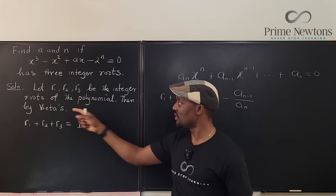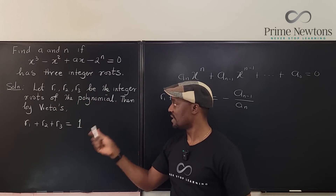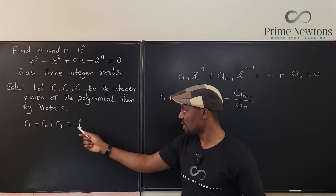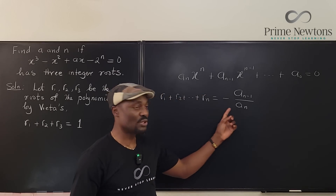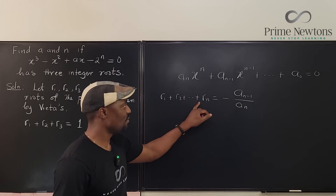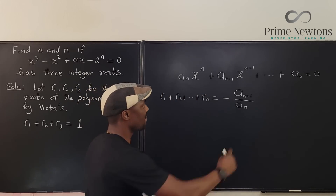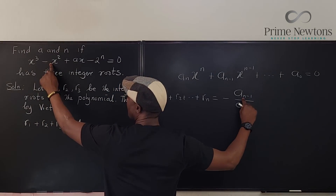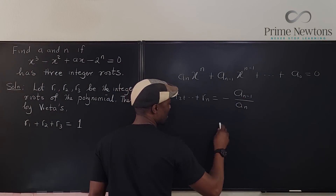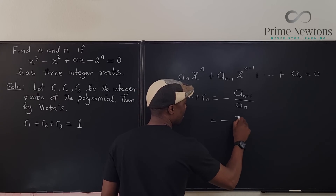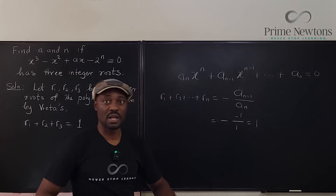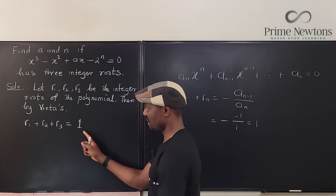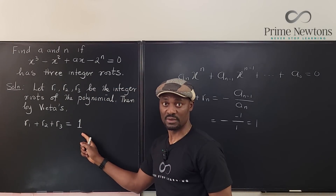Let r1, r2, r3 be the integer roots of the polynomial. By Vieta's formula, the sum of the roots must equal 1, because it equals negative of the second coefficient (which is -1) over the leading coefficient (which is 1), giving us negative times -1 over 1 = 1. Now it's easy to focus on this since we have a concrete number.